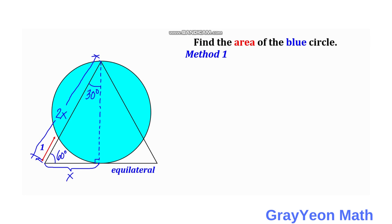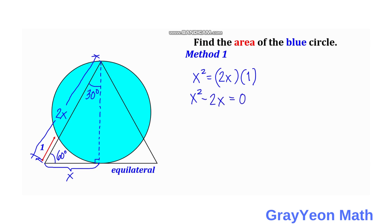Next, we apply the tangent-secant theorem. We square this tangent segment, and that would be: x squared is equal to the whole secant segment, which is 2x, times this exterior secant, which is 1. And we actually form a quadratic equation: x squared minus 2x is equal to 0.